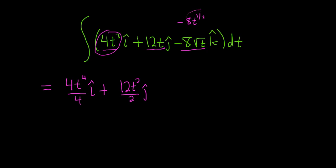And then here, we have to have our 8, and then our t, and it's 1/2 plus 1, so that's 3-halves, because 1/2 plus 1 is really 1/2 plus 2-halves. So then we divide by 3-halves. Now, when you divide by 3-halves, you really multiply by 2-thirds. Then we have our k-hat.